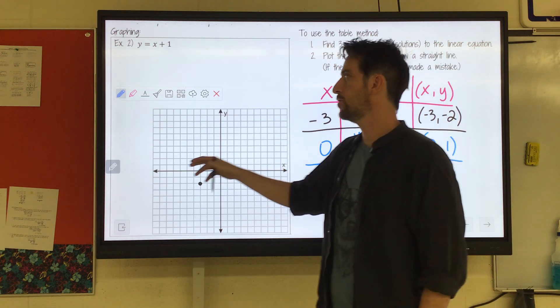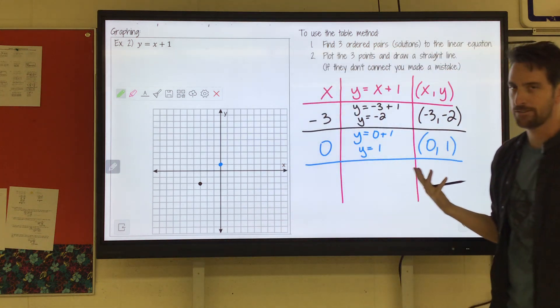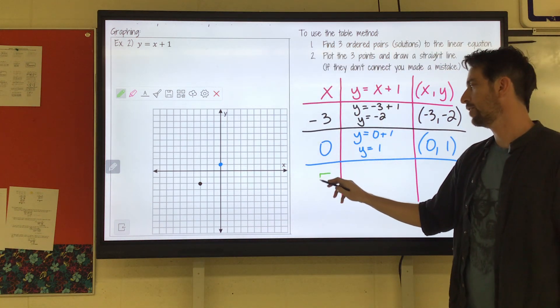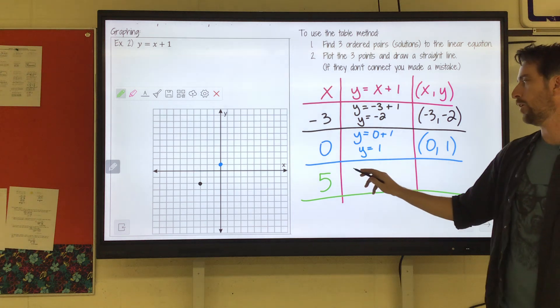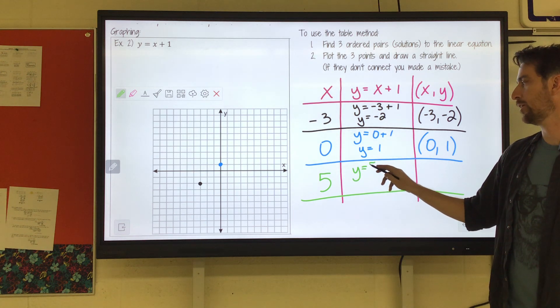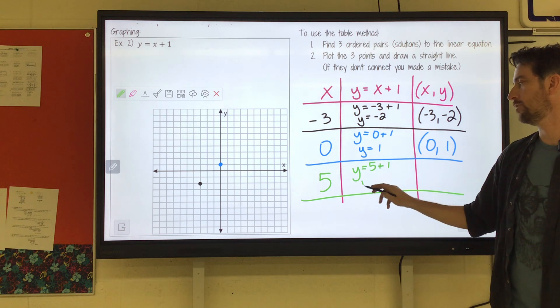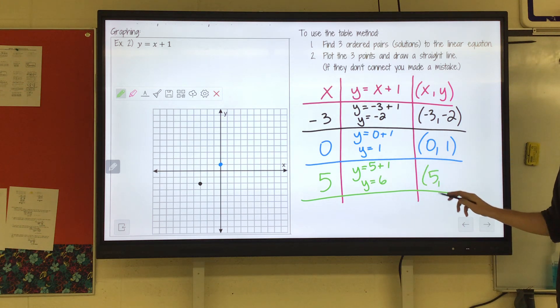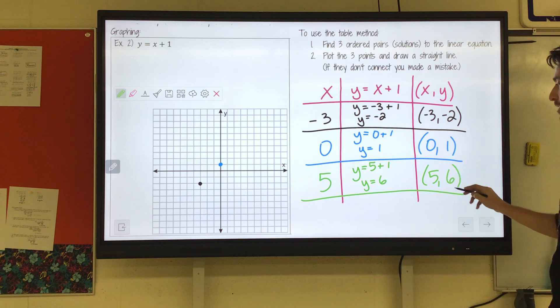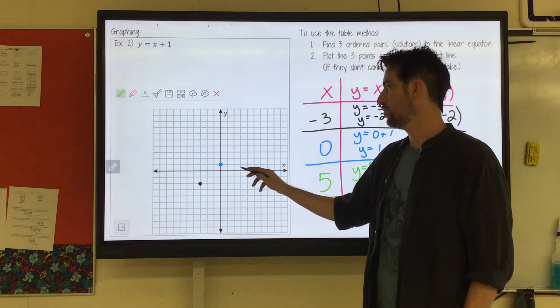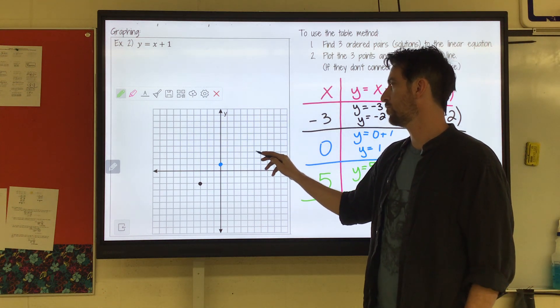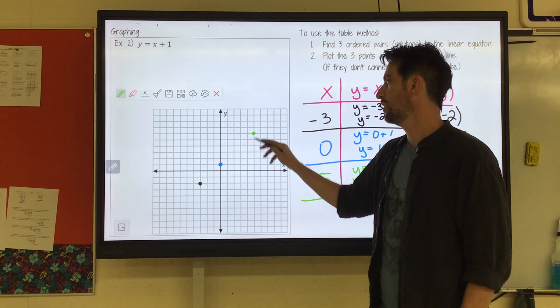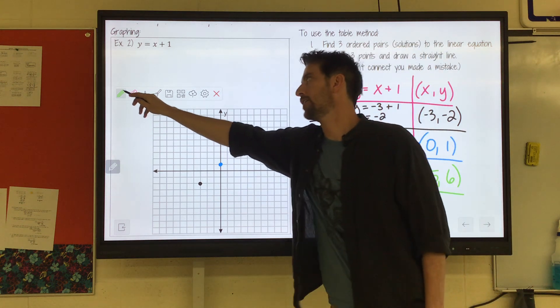And then we're going to choose one other number. I'm going to pick a positive number. Let's say I pick 5. Y equals x plus 1. So y equals 5 plus 1, which is 6. So our x was 5. We chose that. We solved it. We got 6. So 1, 2, 3, 4, 5. 1, 2, 3, 4, 5, 6. Look at that. They form a nice straight line, too.